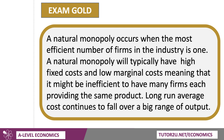A natural monopoly is a very specific type of industry, and it occurs when the most efficient number of firms — thinking about productive efficiency — in an industry is probably one. Thinking about water infrastructure, water and sewage, the fixed cost of the network, the infrastructure setting up the whole industry, is incredibly high, but the marginal cost of each extra user is low.